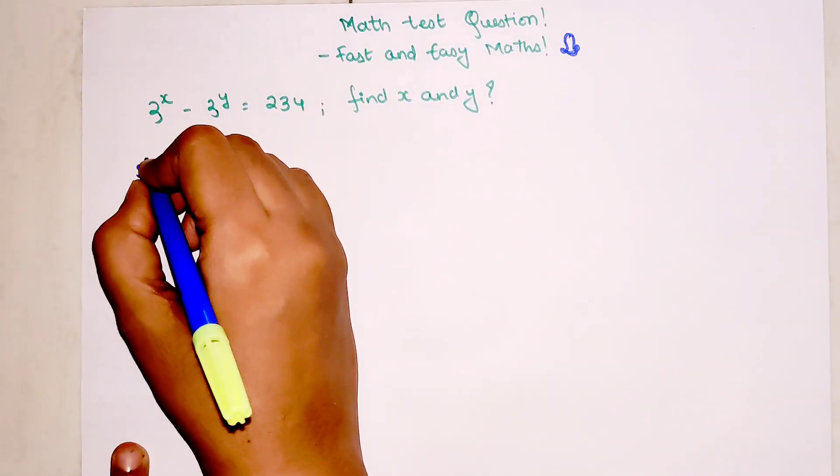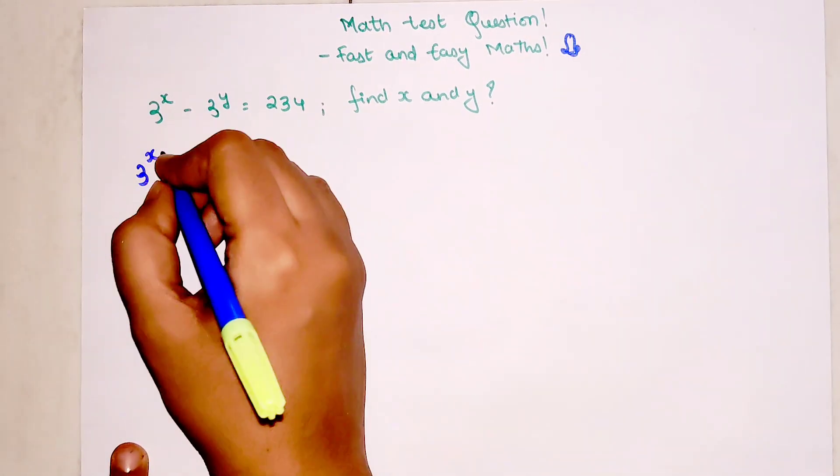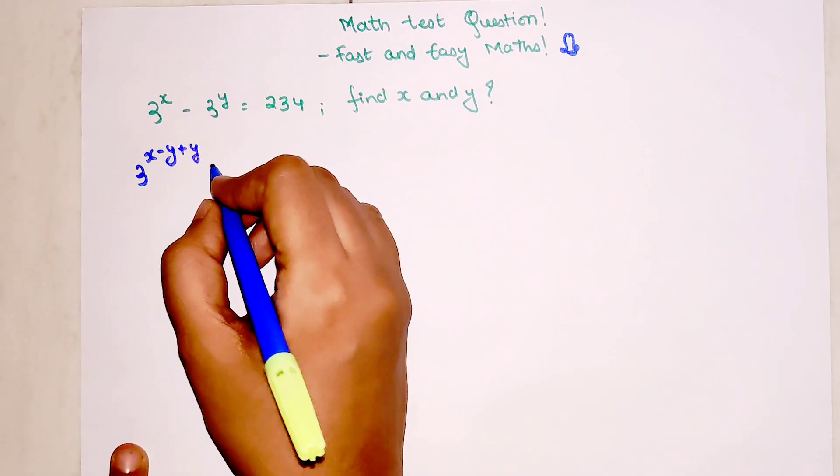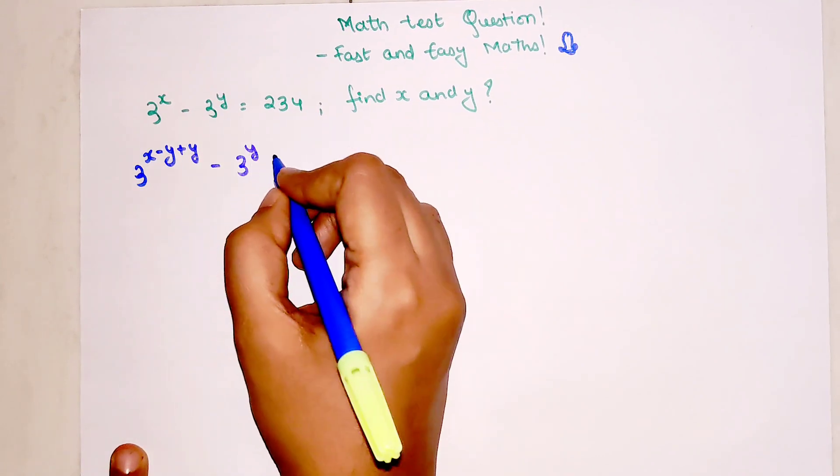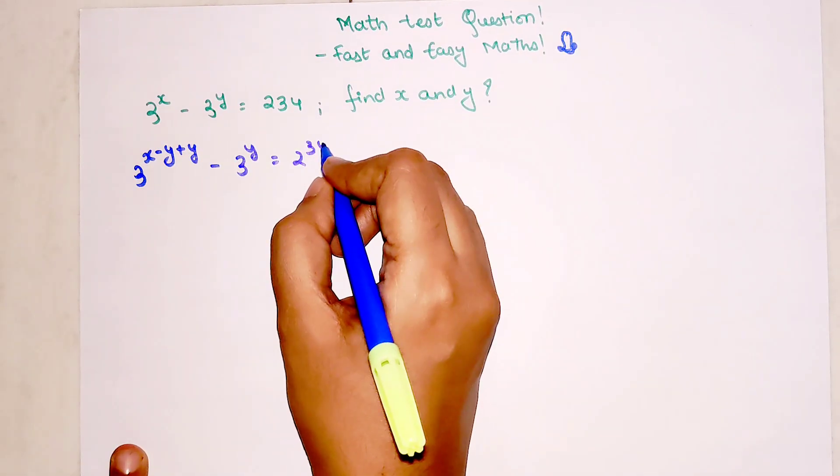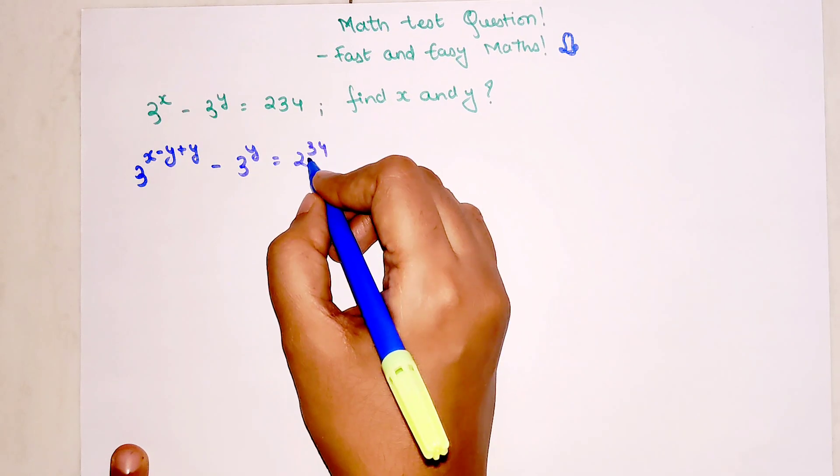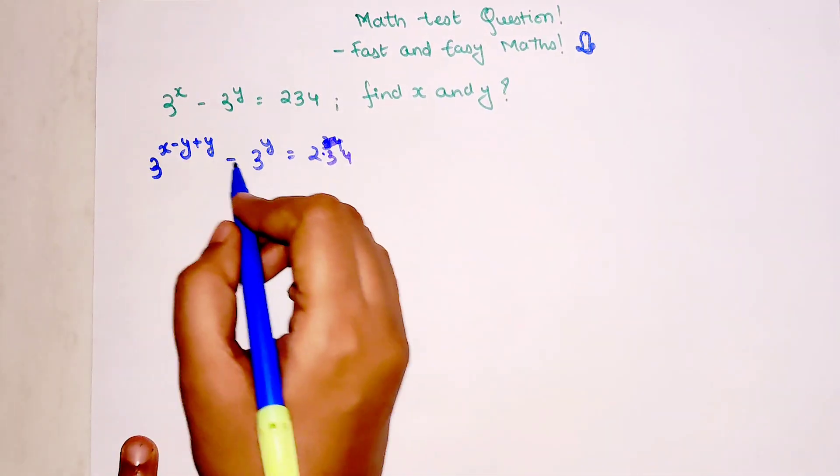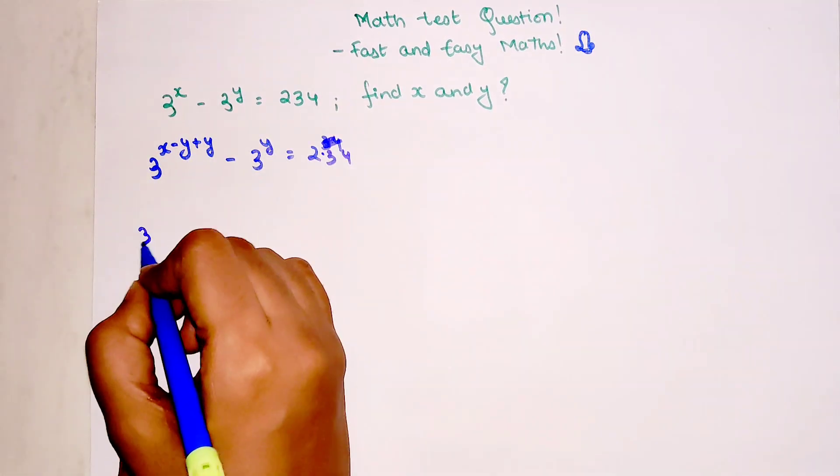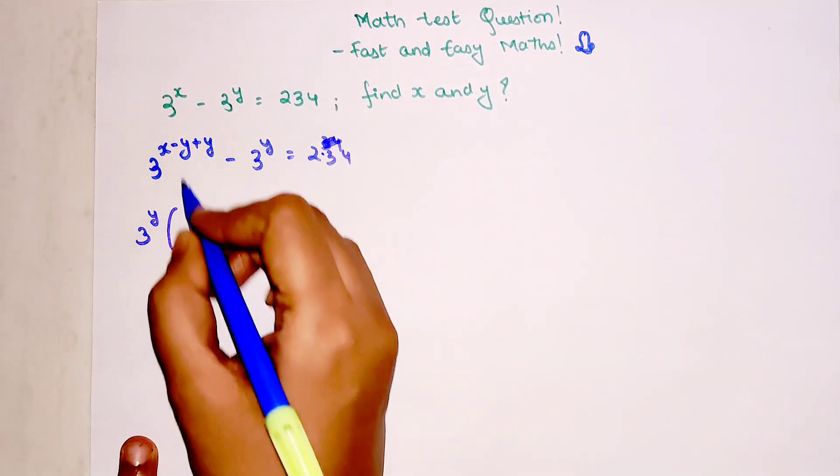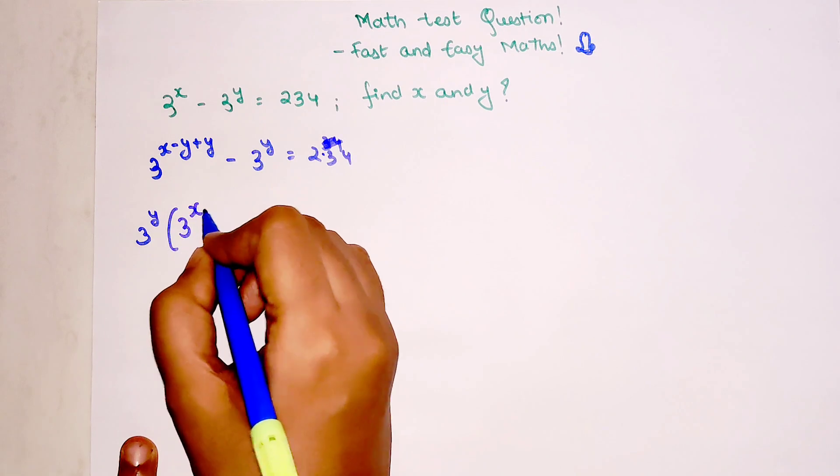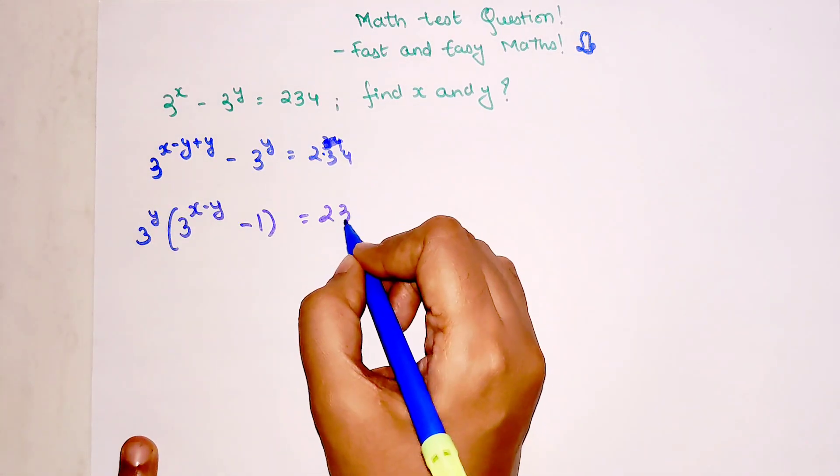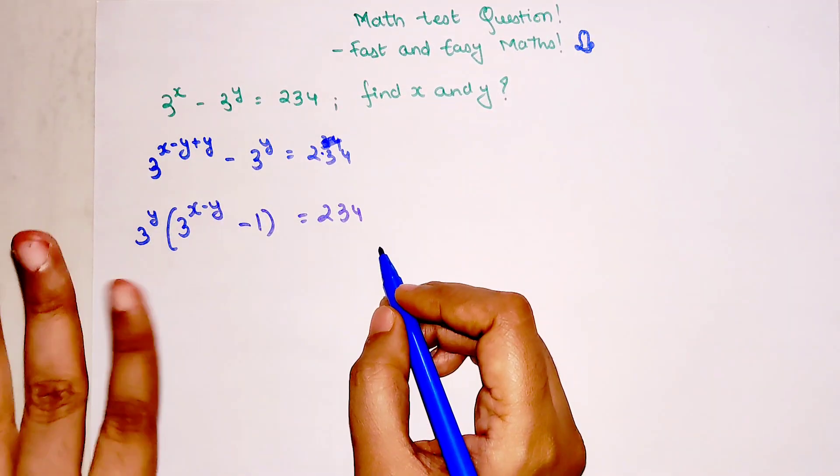We will try to find something which is common in the indices. So let's do x minus y plus y over here. 3 raised to x minus y plus y minus 3 raised to y equals 234. Now if I take common 3 raised to y, I will be left with 3 raised to y times 3 raised to x minus y minus 1 equals 234. This is super important.